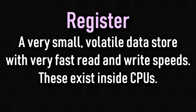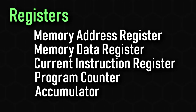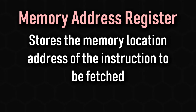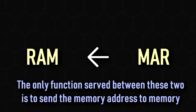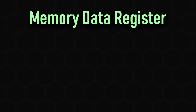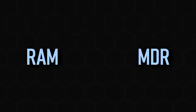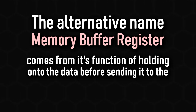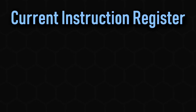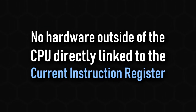A register is a small volatile memory store that holds important data the CPU is currently using. The most notable ones are the MAR, MDR, CIR, program counter, and accumulator. The memory address register stores the address of the memory location the control unit requests to be accessed, and is linked to RAM by a one-way bus. The memory data register, also known as the memory buffer register, stores data from the memory location in the MAR and is linked to memory through a bidirectional bus. The MBR name reflects its purpose of holding instructions before sending them to the CIR. Finally, the current instruction register stores the instruction currently being processed, and is not usually linked directly to RAM.